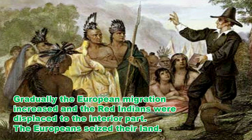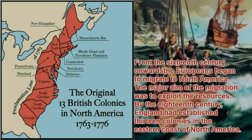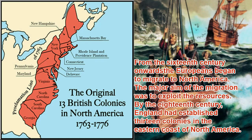Gradually, European migration increased and the Red Indians, the natives of America, were displaced to the interior. From the 16th century onwards, Europeans began to migrate to North America. The major aim of this migration was to exploit the resources. By the 18th century, England had established 13 colonies on the eastern coast of North America.